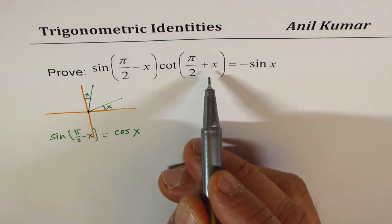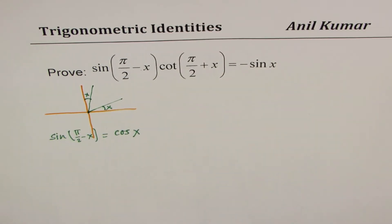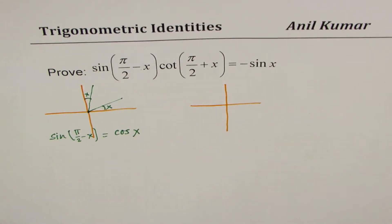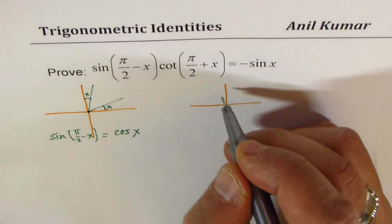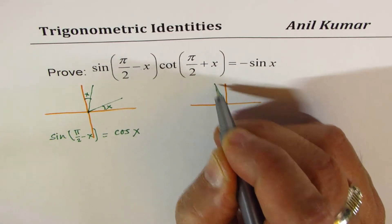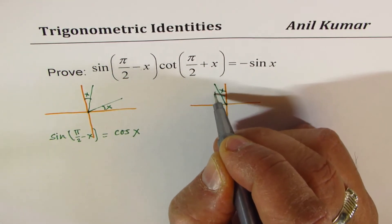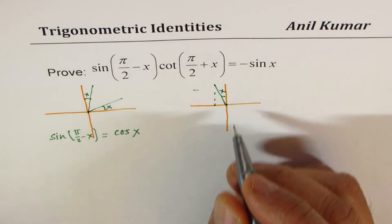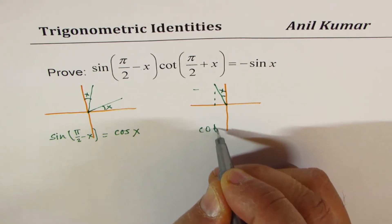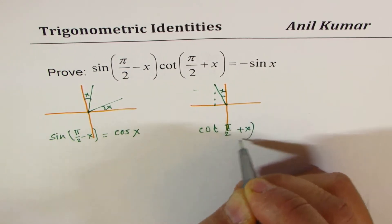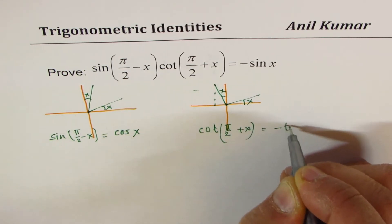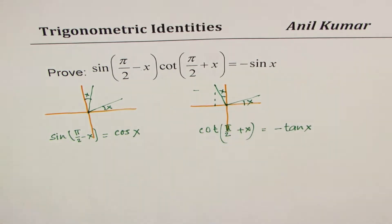Now what is cot(π/2 + x)? π/2 + x means we are in quadrant 2. In this quadrant, cot is negative. Therefore cot(π/2 + x) equals negative tan(x). So these are the terms written in terms of their related acute angles.